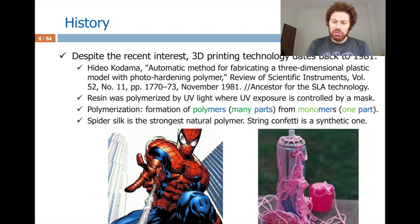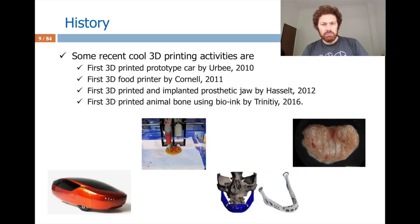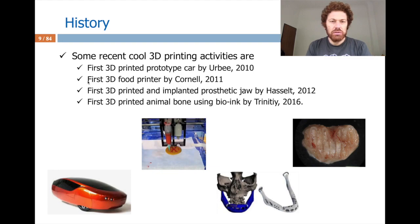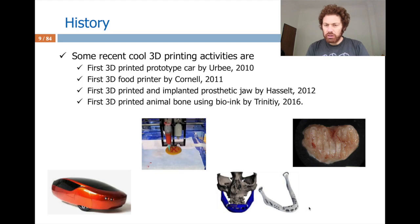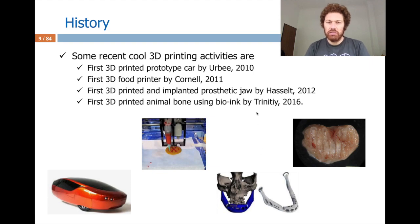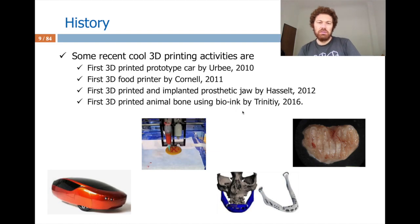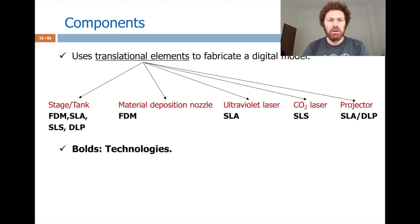Coming to the 21st century history of 3D printing, we see car prototyping, foot printing, and prosthetic gloves being 3D printed in 2012. Another medical application uses bio-ink to create bones, tested on animals — it is a promising area.